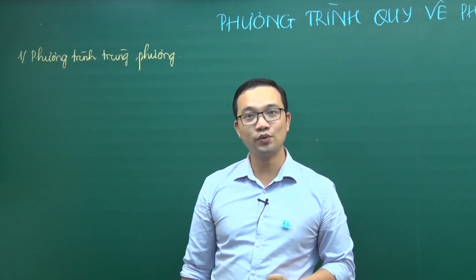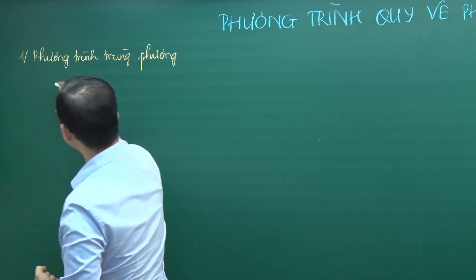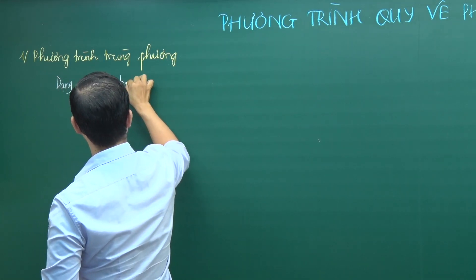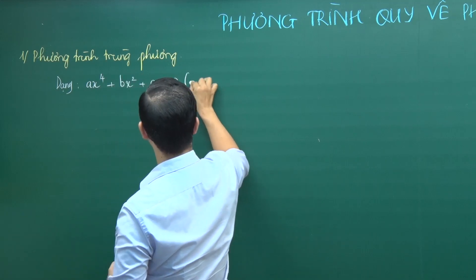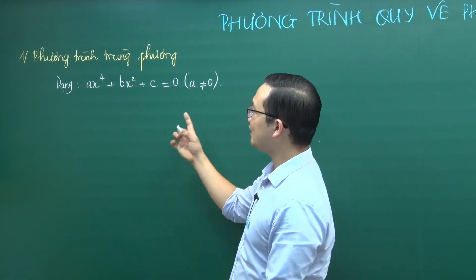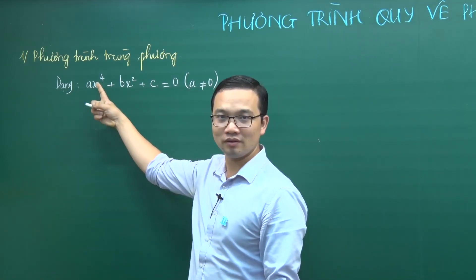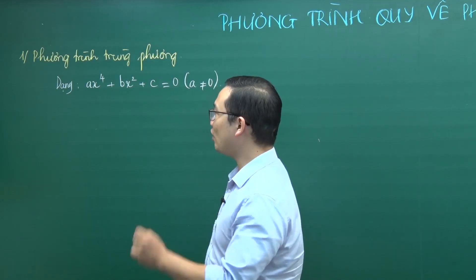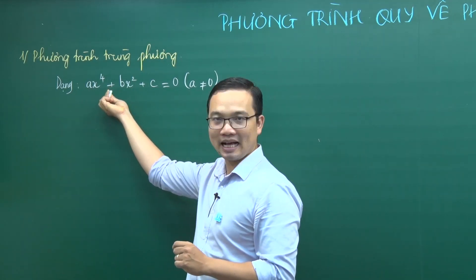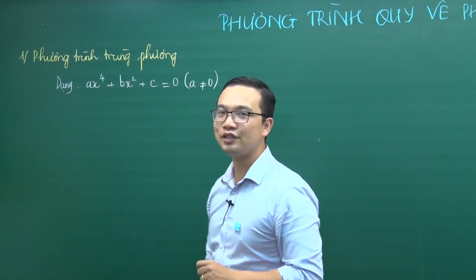Phần thứ nhất: phương trình trùng phương. Phương trình trùng phương là gì? Phương trình trùng phương là phương trình có dạng Ax⁴ + Bx² + C = 0 với điều kiện A khác 0. Phương trình này không phải là phương trình bậc 2 — nó là phương trình bậc 4. Điểm đặc biệt là nó có Ax⁴, không có Ax³, không có Ax và có thể có Ax². Đây được gọi là phương trình trùng phương.